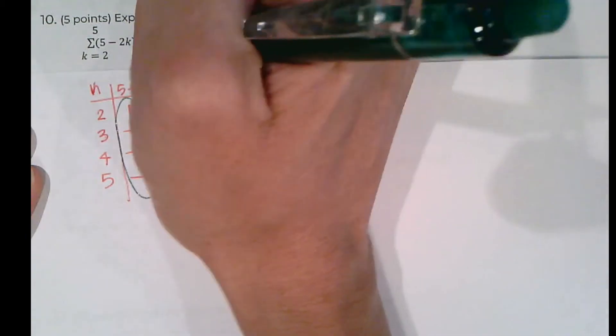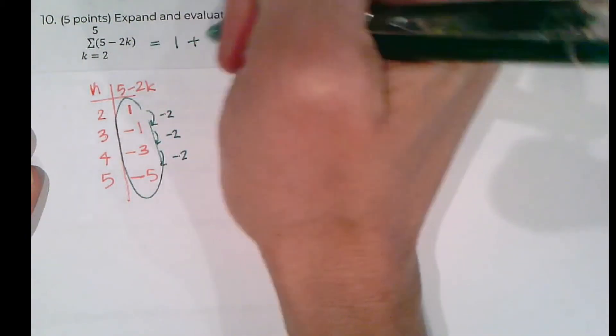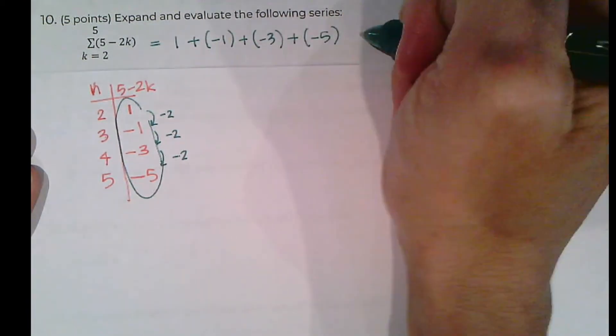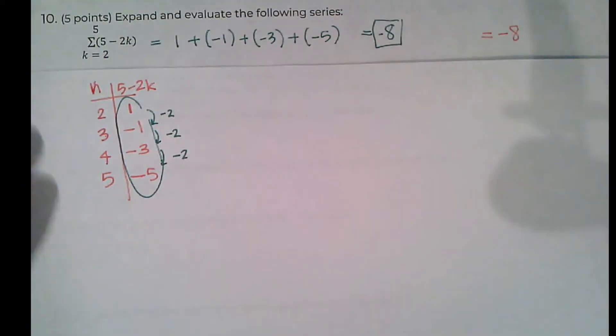So these are the things that I'm adding together. So it's going to be 1 plus negative 1 plus negative 3 plus negative 5. That's what gives me out that negative 8 that is my answer.